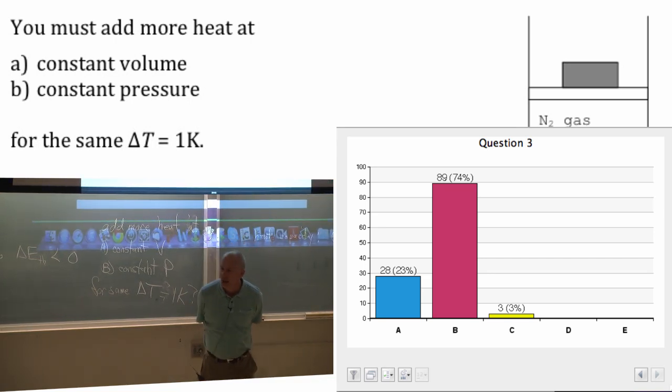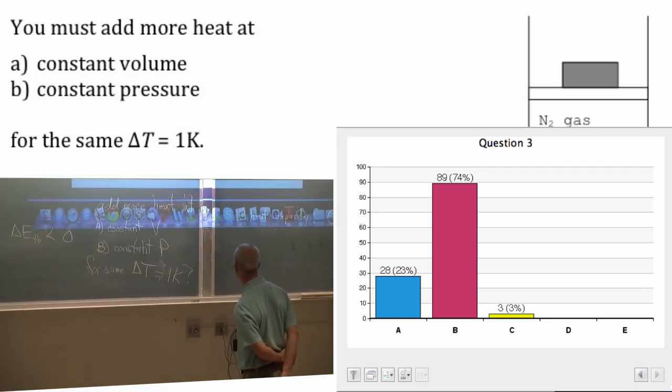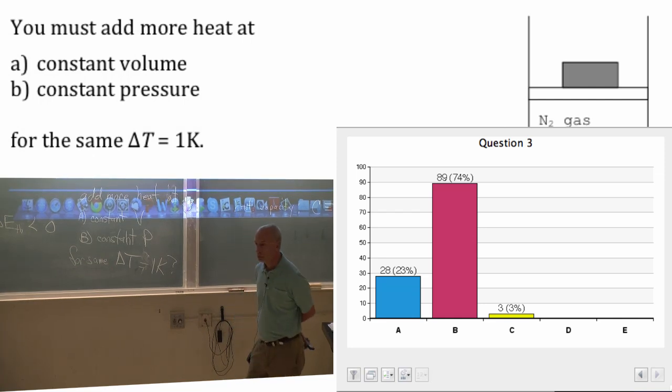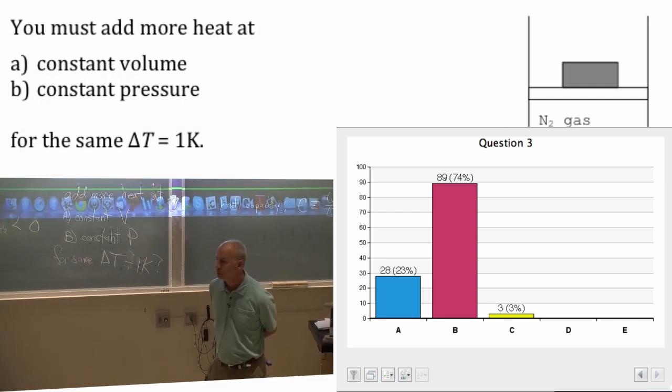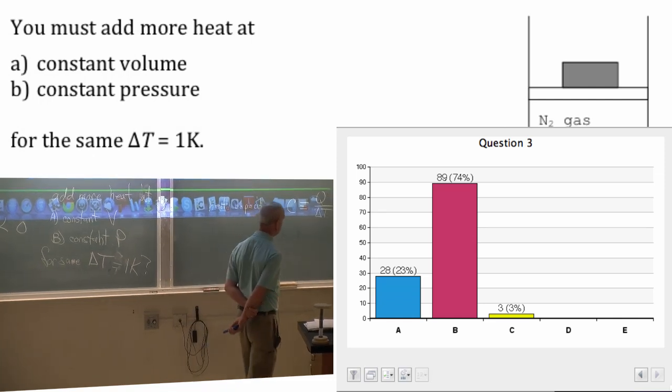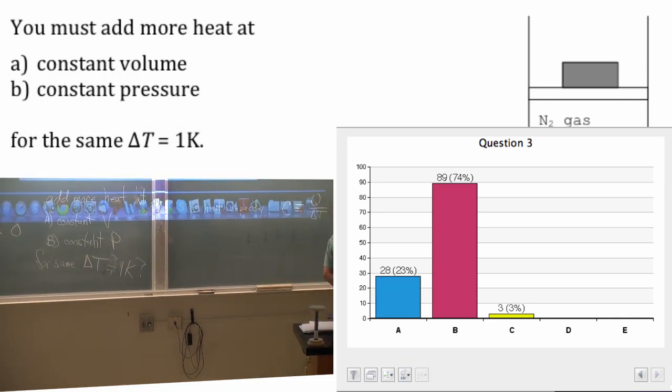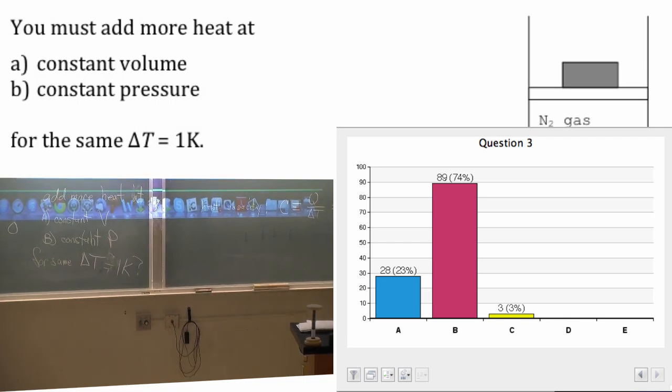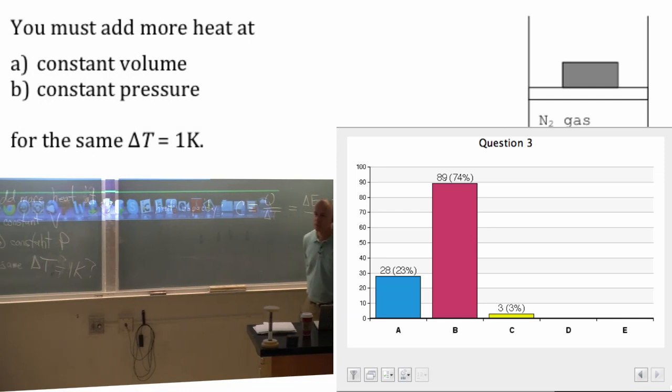Well, for B, at a constant pressure, you can release some energy through work. And so not all of the energy you put in is going to go directly to changing the temperature. Whereas, at a constant volume, you can't really release energy by working.